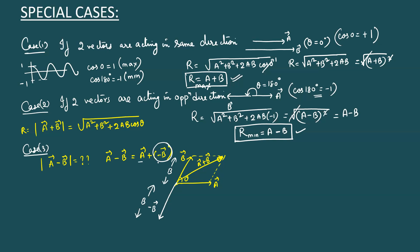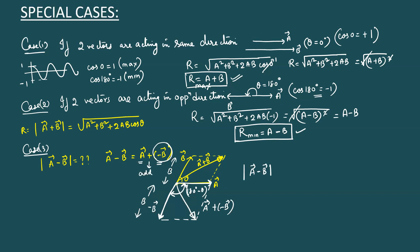Now I add A⃗ and (−B⃗) using the parallelogram law. I draw a parallel side for −B⃗ and a parallel side for A⃗, and the diagonal represents the resultant A⃗ − B⃗. What is the angle between A⃗ and −B⃗? Since the original vectors form angle θ, and the whole arrangement is a straight line, the angle between A⃗ and −B⃗ is (180° − θ). The diagonal represents A⃗ + (−B⃗), which is A⃗ − B⃗.